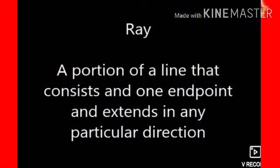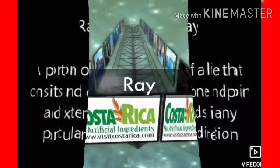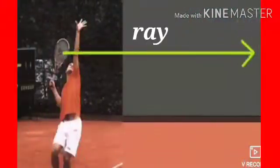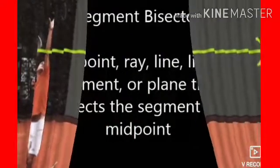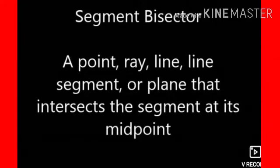A ray is a portion of a line that consists of one endpoint and extends in any particular direction. A segment bisector is a point, ray, line, line segment, or plane that intersects the segment at its midpoint.